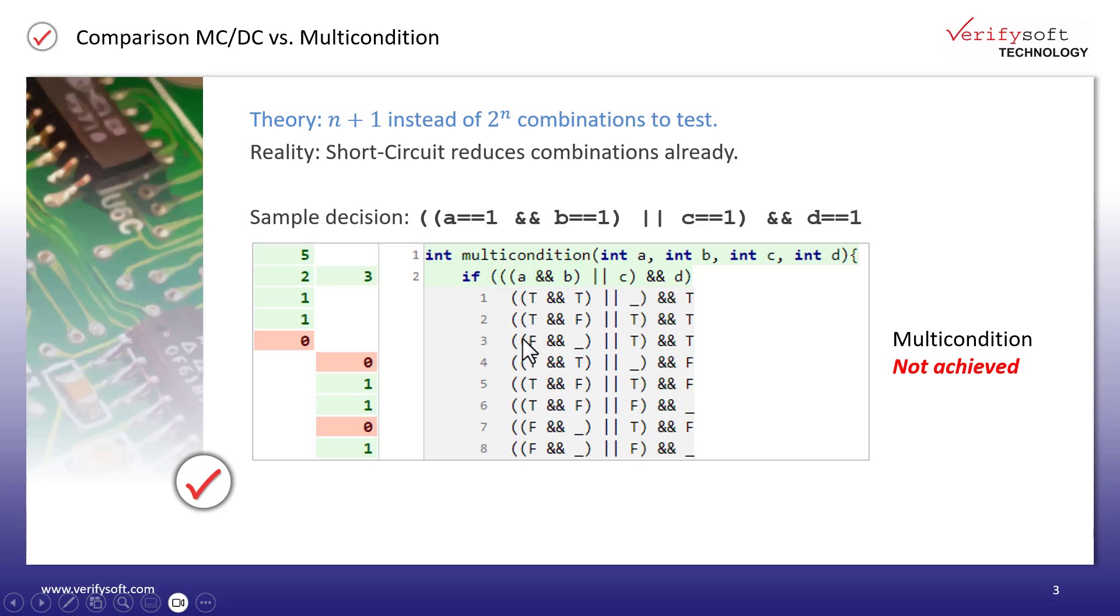Therefore, in addition to the Ts for true and the Fs for false, there are also underscores in the truth table. These stand for don't care. Each of these don't care leads to a reduction in test cases to achieve multi-condition coverage. Short circuit evaluation reduces the number of theoretical 16 cases to actually 8 as seen in this report.